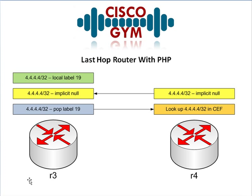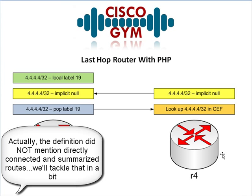In order to find out what this actually means, let's go ahead and revisit our scenario from earlier with our last hop router, and let's see how this works with Penultimate Hop Popping. 4.4.4.4/32 is the loopback zero interface on R4, so it's a local interface. And remember, in our definition, directly connected and summarized routes are going to get this PHP treatment.